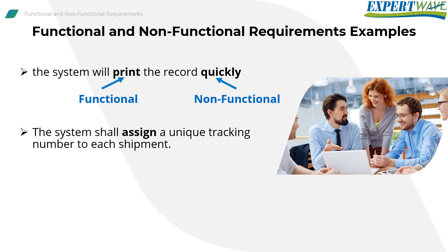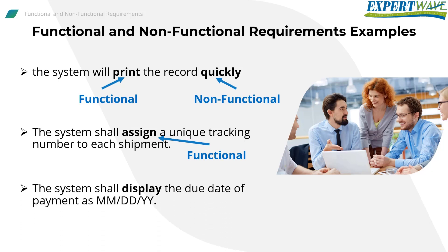Therefore, 'the system shall assign a unique tracking number to each shipment' is a functional requirement because it tells us what the system does or assigns. 'The system shall display the due date of payment as month, day, year' is also a functional requirement because it tells us what the system will display.